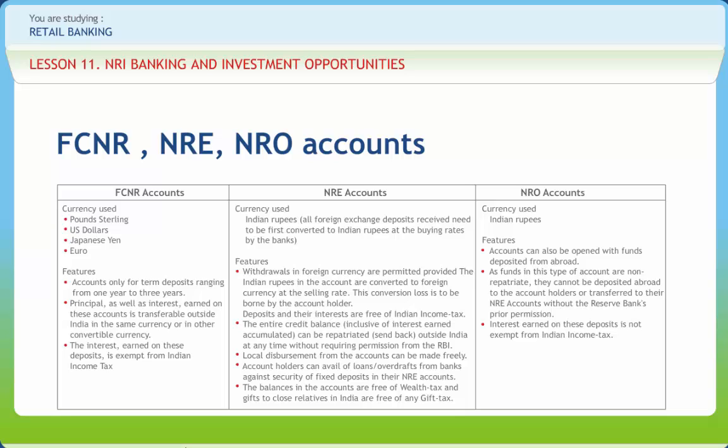NRI banking facilitates the NRI customer to open the following types of accounts: 1. NRE — Non-Residential External Account; 2. NRO — Non-Residential Ordinary Account; 3. FCNRB — Foreign Currency Non-Residential Bank Account. All NRIs are permitted by the Reserve Bank of India to open all these accounts except for people residing in Pakistan or Bangladesh, who would need special permission. Joint accounts of two or more non-residents and nomination facility are permitted. The NRE account is opened in the form of savings, current or fixed deposits in Indian rupees. For features and currency used in NRO, NRE and FCNR, refer to the table given in this slide.